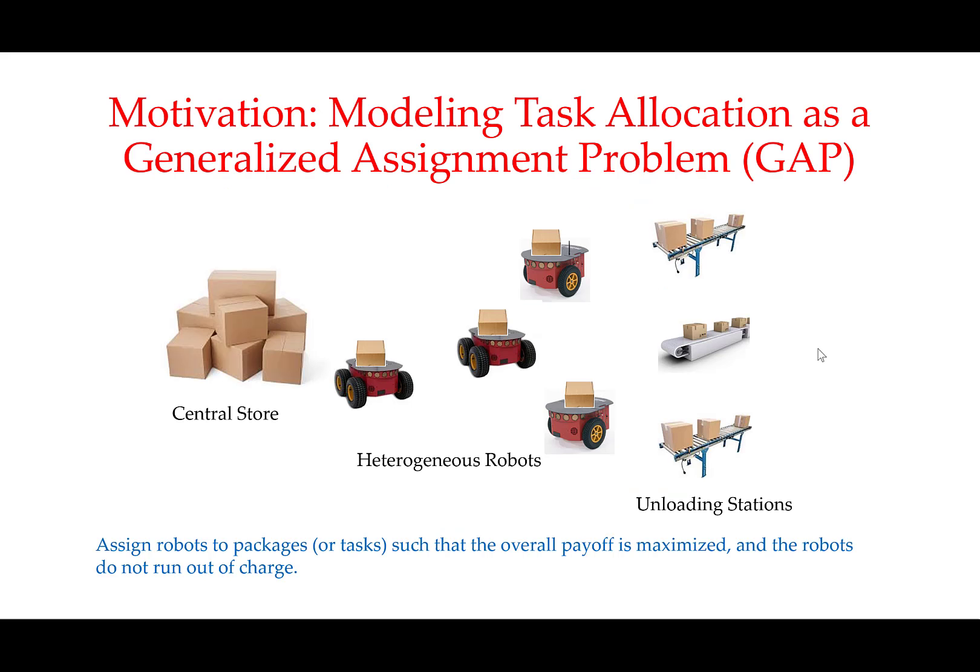There are certain classes of multi-robot task allocation problems that can be modeled as generalized assignment problems. For example, consider the scenario shown in the figure. There is a collection of packages of different weights and sizes that have to be moved from a central store to some unloading stations by a set of robots. The robots are heterogeneous in their capability to carry packages. The suitability of a robot to a particular package or task is encoded as a payoff value for a robot-task pair.